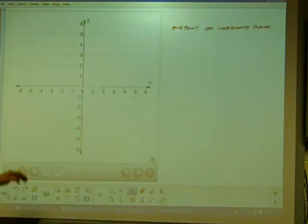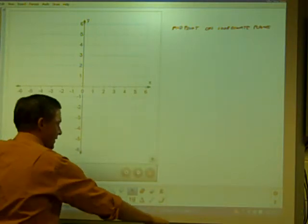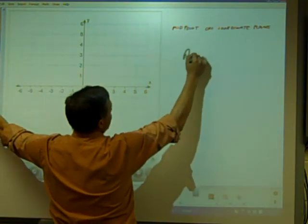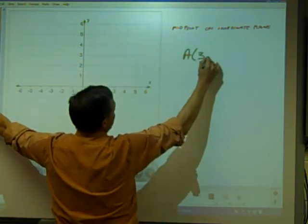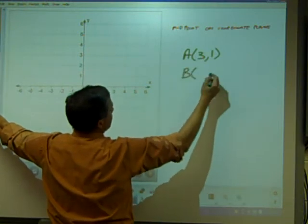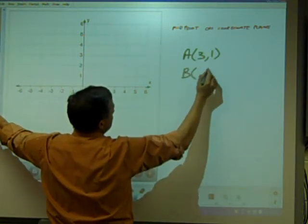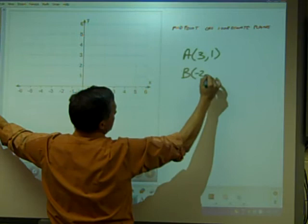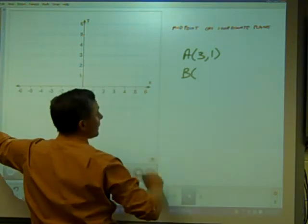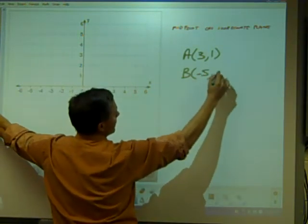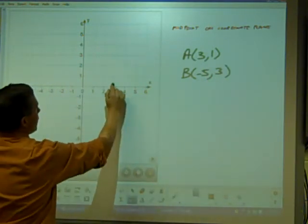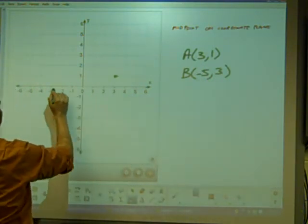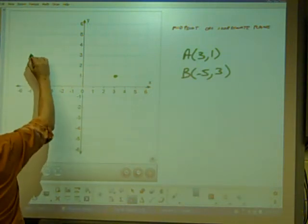Lastly, we can do it on the coordinate plane. When you think of a number line, Y is always zero, but now we can move around the coordinate plane. And I always do this the same way. A is 3 comma 1, B is negative 5 comma 3.